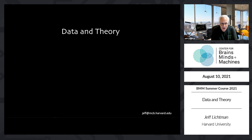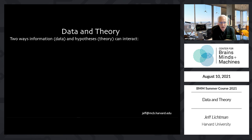I'm going to talk today. I'm giving a talk I've not given before, and I'm going to try out some new ideas. This is a talk about something that people who do connectomics are very aware of, which is the relation between information or data and ideas, theories that explain data. There are two ways information — by information I mean just data, data that is reliable — and theories or hypotheses can interact.